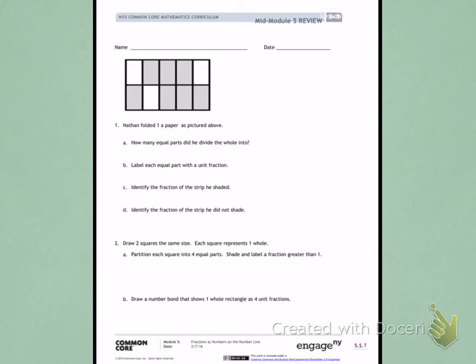How many equal parts did he divide the whole into? If we count carefully, we can see 1, 2, 3, 4, 5, 6, 7, 8, 9, 10. So he has folded the paper into 10 equal parts.